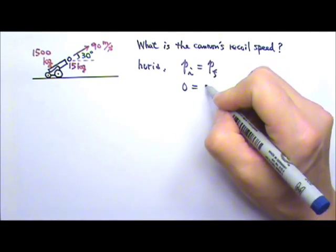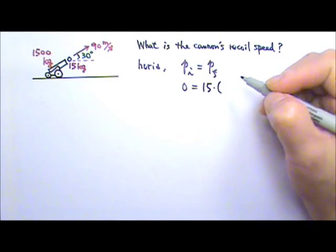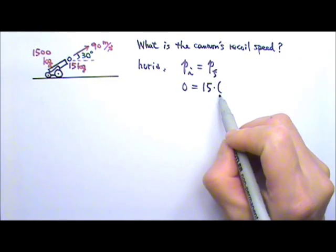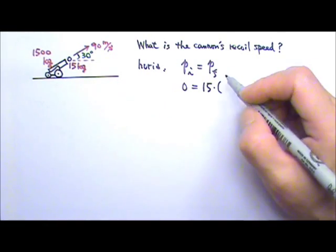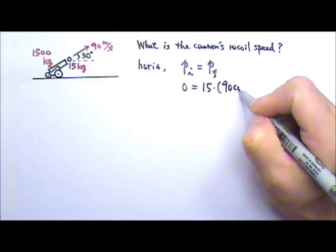Afterwards, the cannonball has a momentum. The horizontal velocity of the cannonball is adjacent to the angle, therefore it is the cosine component.